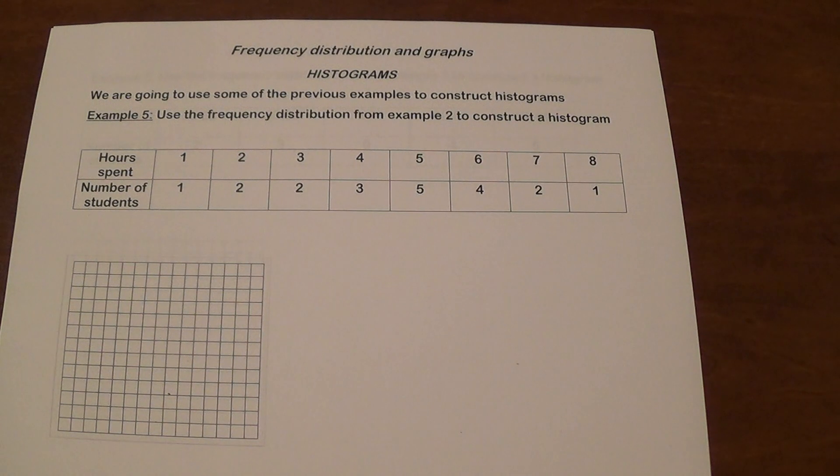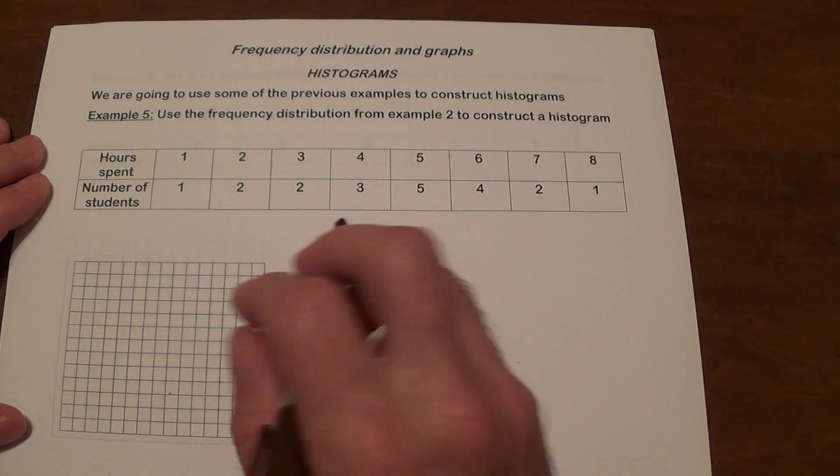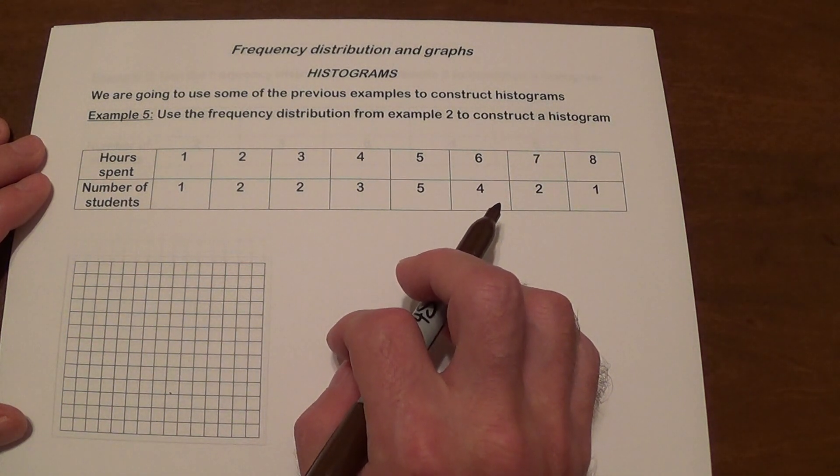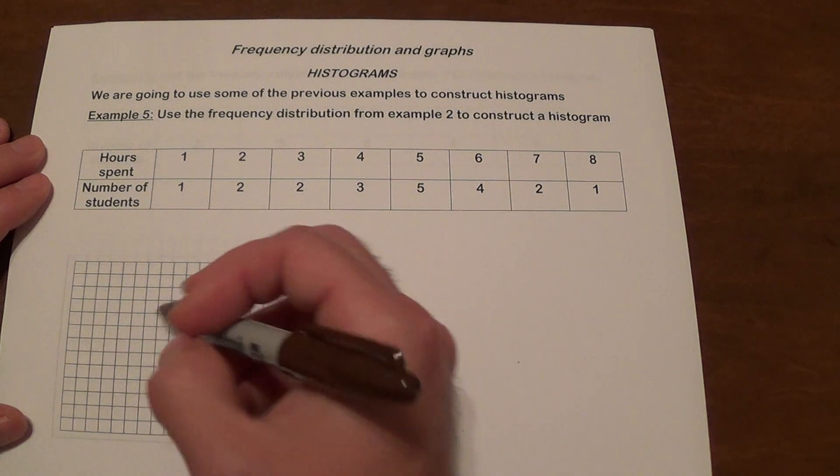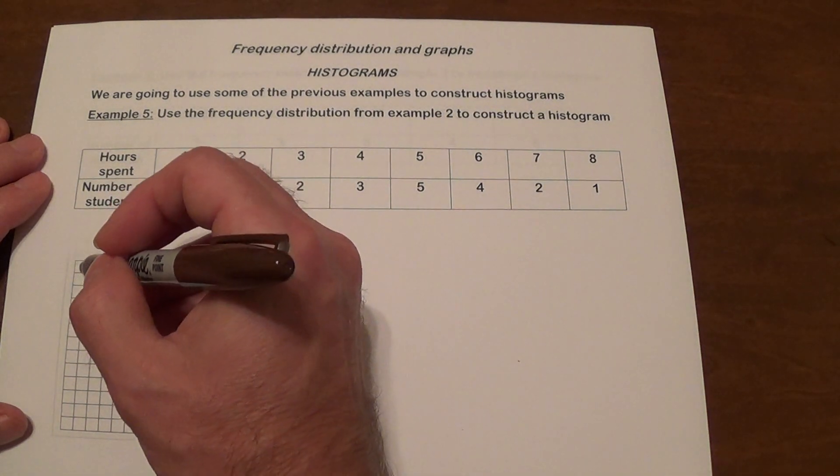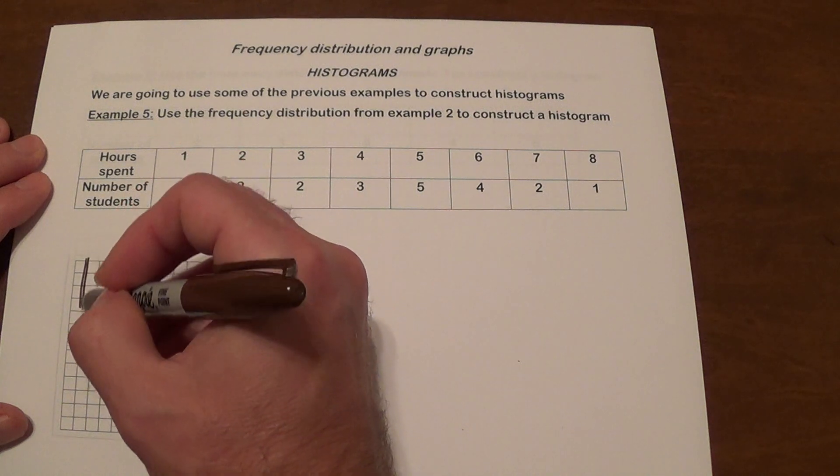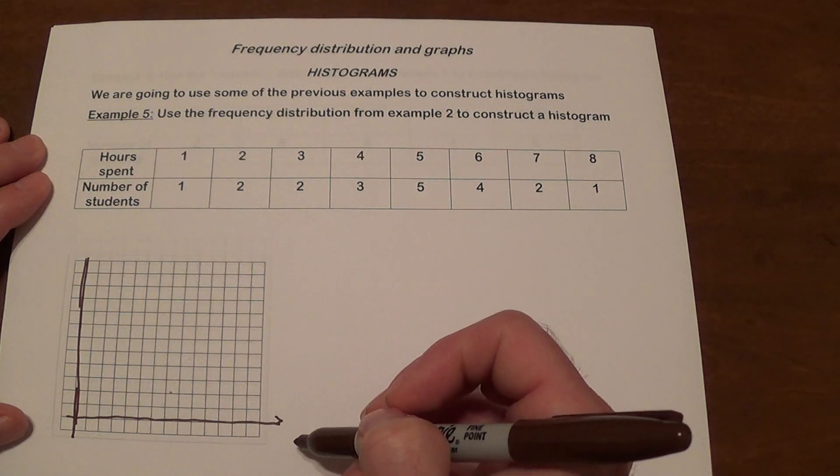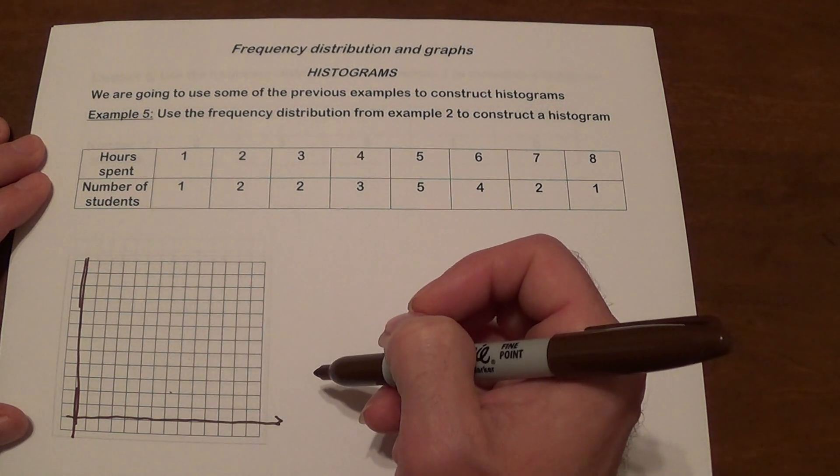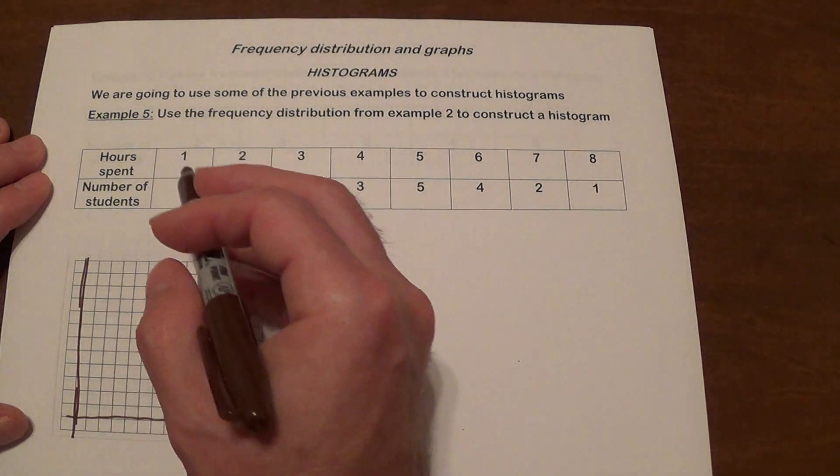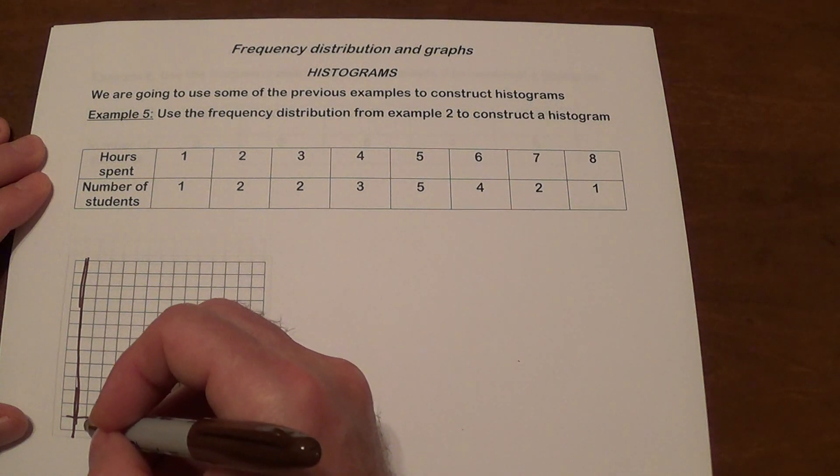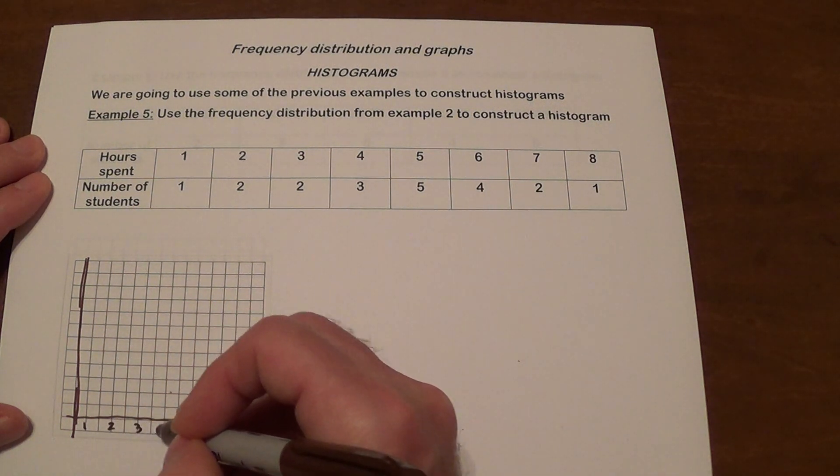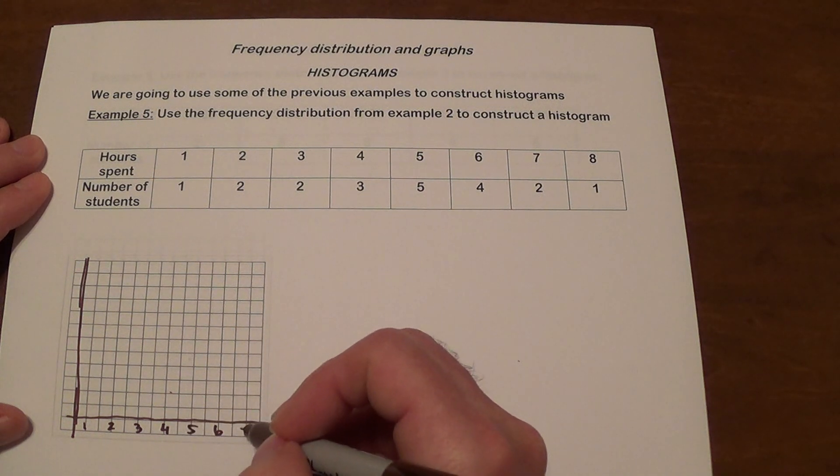Now another thing that we can do is we can do something that's called a histogram. A histogram is a visual way of organizing that that basically shows like bars. So this is the table that we already had done before, frequency distribution from example two. We're going to construct a histogram. So what we do when we construct a histogram we're going to go like that and like that. So horizontally we're going to go with our values and vertically we're going to go with frequencies. So our values will be, so we're going to go from 1 to 8. So it's going to be 1, 2, 3, 4, 5, 6, 7, 8.